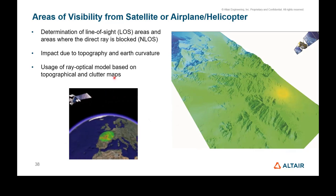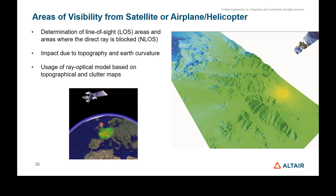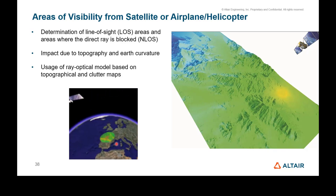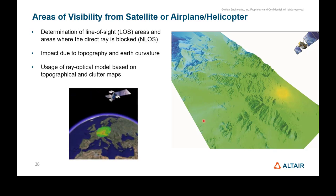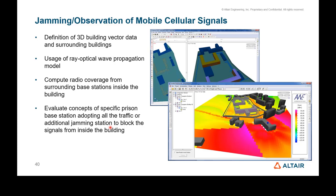WinProp also supports satellite analysis in terms of ground coverage visibility — placing a transmitter in the sky and computing ground coverage. Satellite indoor radio coverage can also be computed — whether satellite communications can penetrate inside a building. Another application is mobile phone jamming analysis; for example, in a prison environment where inmates should not communicate with the outside, jammer placement can be optimized to prevent communications within the building.